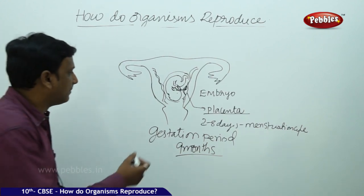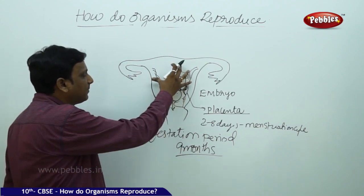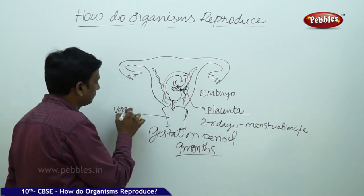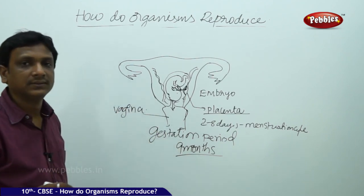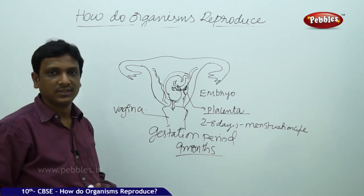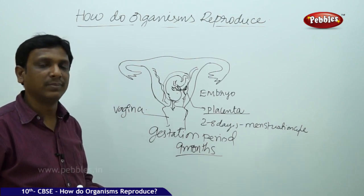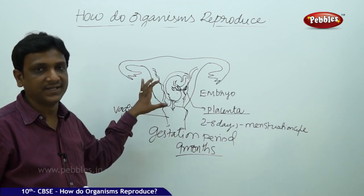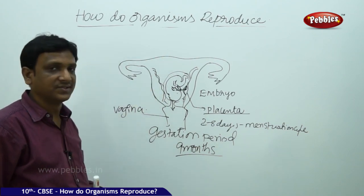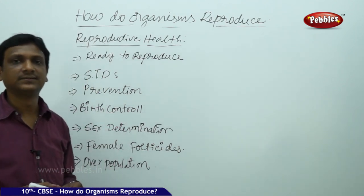Once the baby is developed, it comes out through the vagina in a natural birth. This is totally controlled by hormones — two female hormones, estrogen and progesterone. Progesterone plays a major role in providing all the necessary conditions and changes in the uterus for the growth of the baby inside. We have discussed sexual reproduction in humans — our own case.